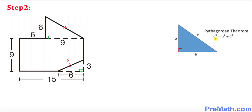Since these are right triangles, we're going to be using the Pythagorean theorem. The Pythagorean theorem is simply c² = a² + b². Always remember that c is going to be the longest leg, and c is also called the hypotenuse.